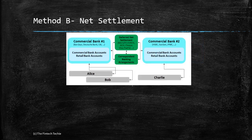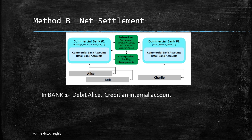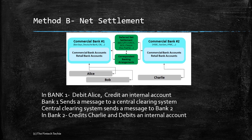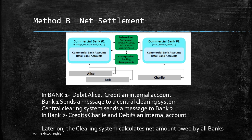Let's look at Method B, the net settlement method. Using the same scenario where Alice transfers to Charlie: Bank One debits Alice's account and credits an internal account. A message is sent by Bank One to a central clearing system, which is usually managed by the central bank or an agency nominated by it. The central clearing system sends a message to Bank Two, which credits Charlie and debits an internal account. At the end of the day or at a scheduled period, the clearing system calculates the net settlement — the net amount owed by all banks — and all this happens in a batch of bulk payments.